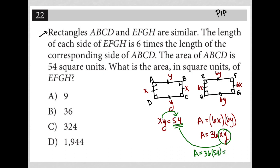So I just go to my calculator and type in 36 times 54, and I get 1,944. So there's my answer, choice D.